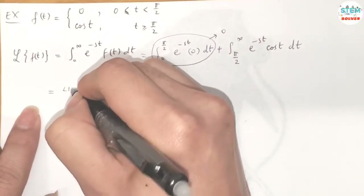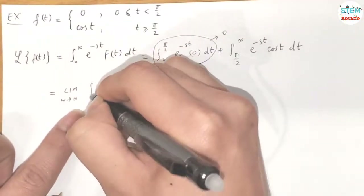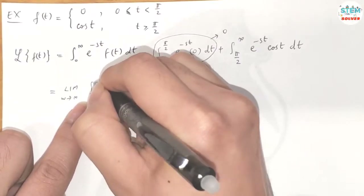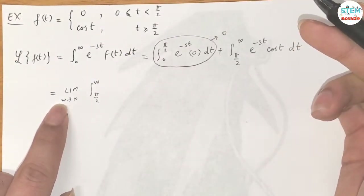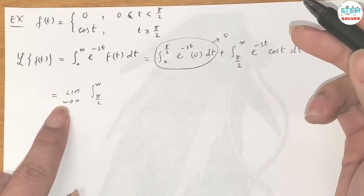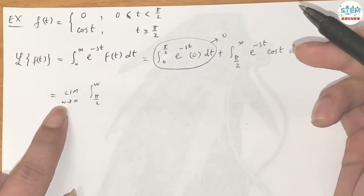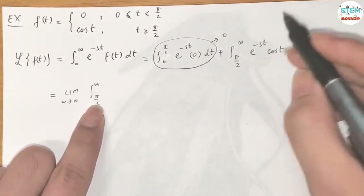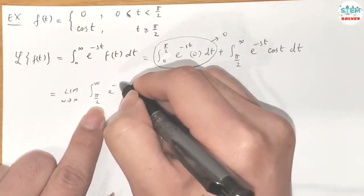So we take the limit as w goes to infinity of the integral from π/2 to w. You can use whatever variable you like — a, b, c — as long as it's different from t. Just rewrite it accordingly.